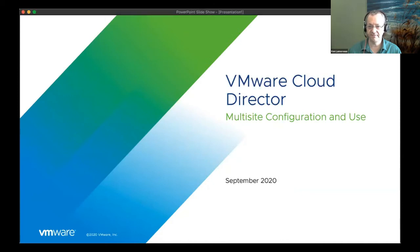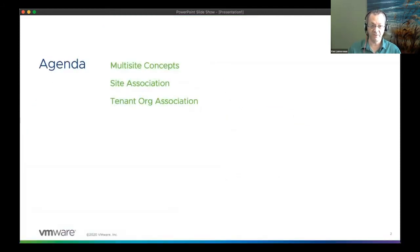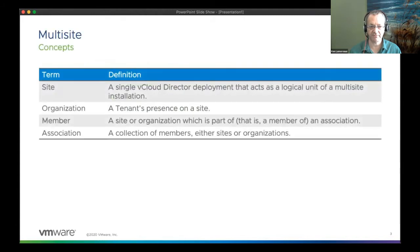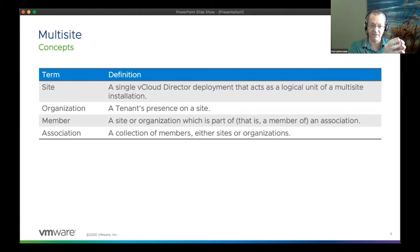We'll talk about the multiple steps involved. First, I'll cover some concepts about multi-site, then we'll get into the two different steps: first is the site associations between the two VCD sites, and then what really gives that tenant feature is the org associations — you map the organizations in the two different sites together, and that gives the tenant that single pane of glass view. A site is a single VMware Cloud Director deployment, and an organization is that tenant's presence in a particular site. When creating associations, you'll have site members or org members of an association.